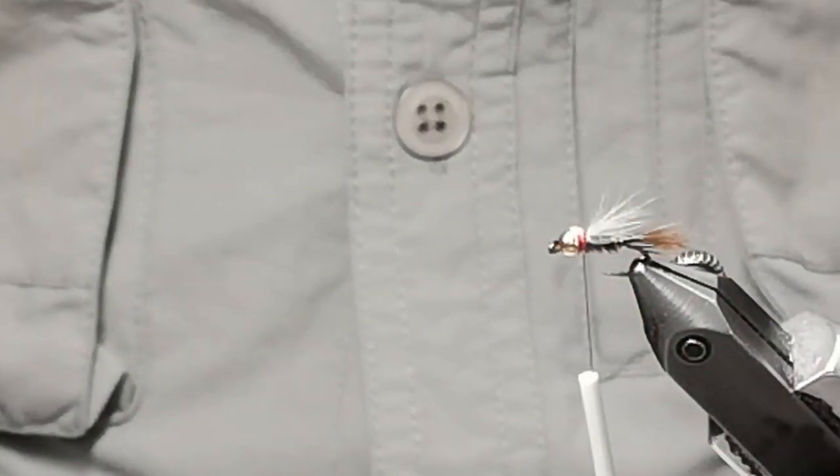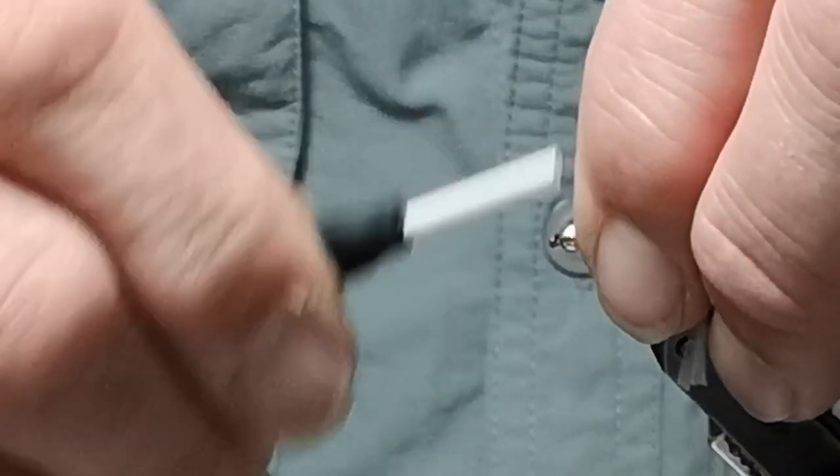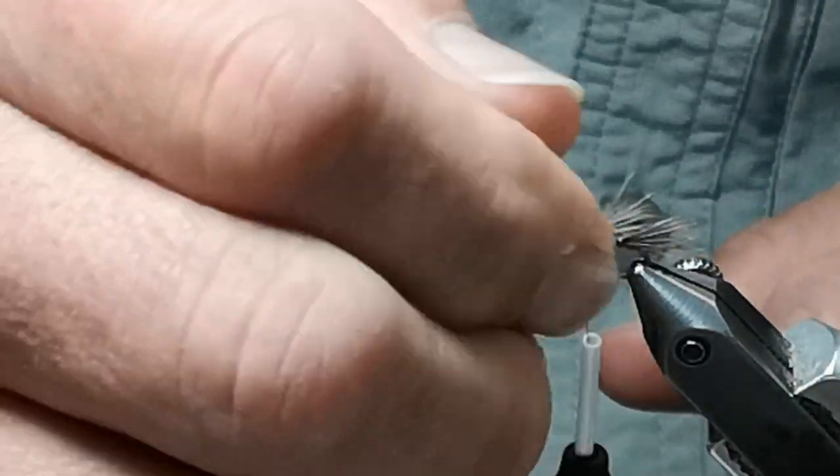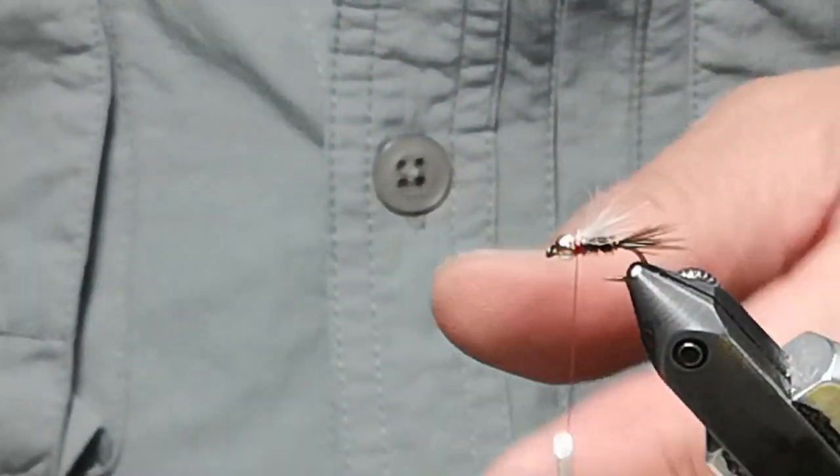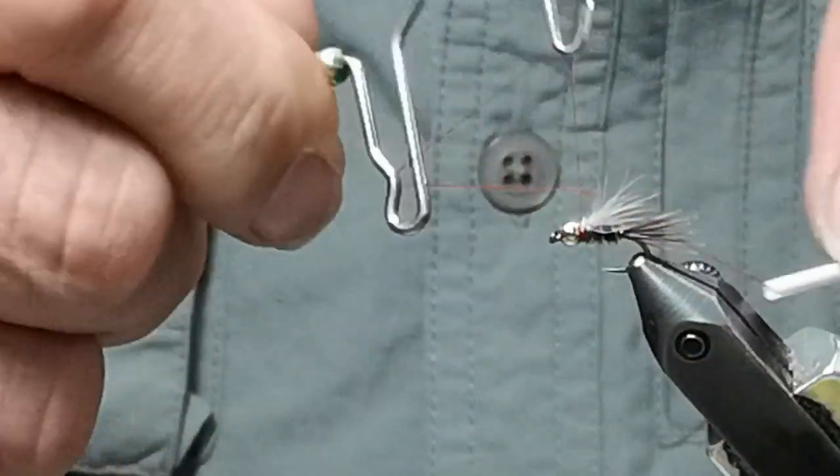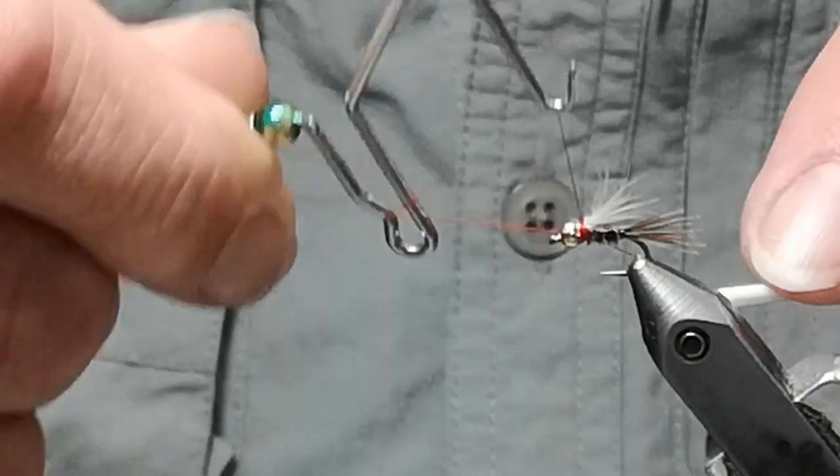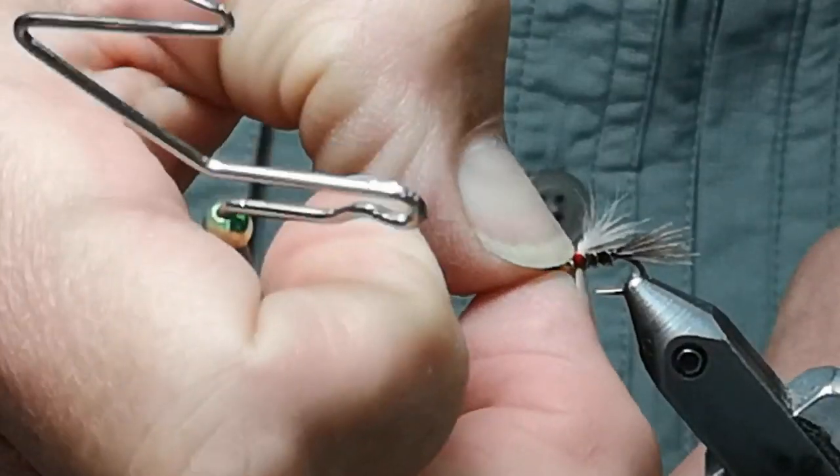I do like to leave the thread visible, like this red thread. I'll build up the neck a little bit to make sure that they can see the red thread in there. And I'll tie it off. That is all the steps it takes to tie this JJ Special pheasant tail fly.